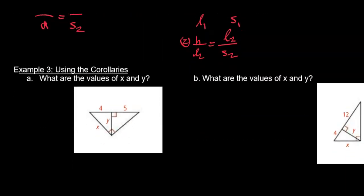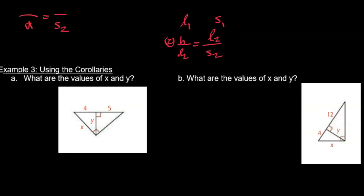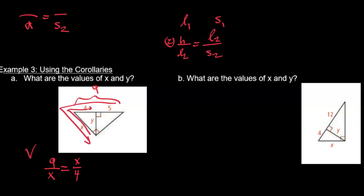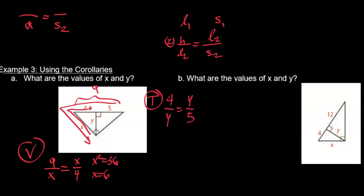So how do we use these corollaries? We have the T theorem and the V theorem. What are the values of X and Y? The whole piece is 9. Using the V theorem: 9 over X equals X over 4, so X squared equals 36, which makes X equal to 6. Now using the T theorem to find Y: 4 over Y equals Y over 5, so Y squared equals 20, which means Y equals 2 times the square root of 5.